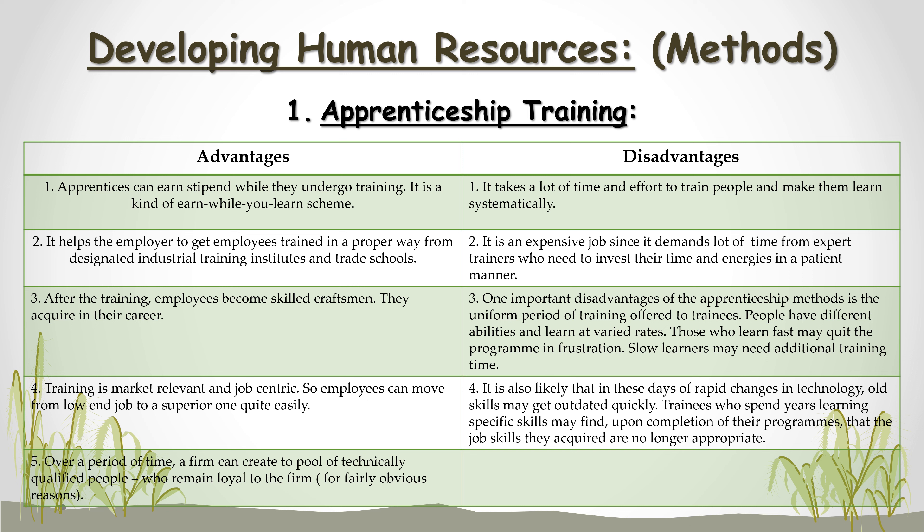Disadvantages. It takes a lot of time and effort to train people and make them learn systematically. It is an expensive job since it demands a lot of time from expert trainers. One important disadvantage of the apprenticeship method is the uniform period of training offered to trainees. People have different abilities and learn at varied rates — those who learn fast may quit in frustration, while slow learners may need additional training time. It is also likely that in these days of rapid changes in technology, old skills may get outdated quickly, and trainees may find that the job skills they acquired are no longer appropriate.